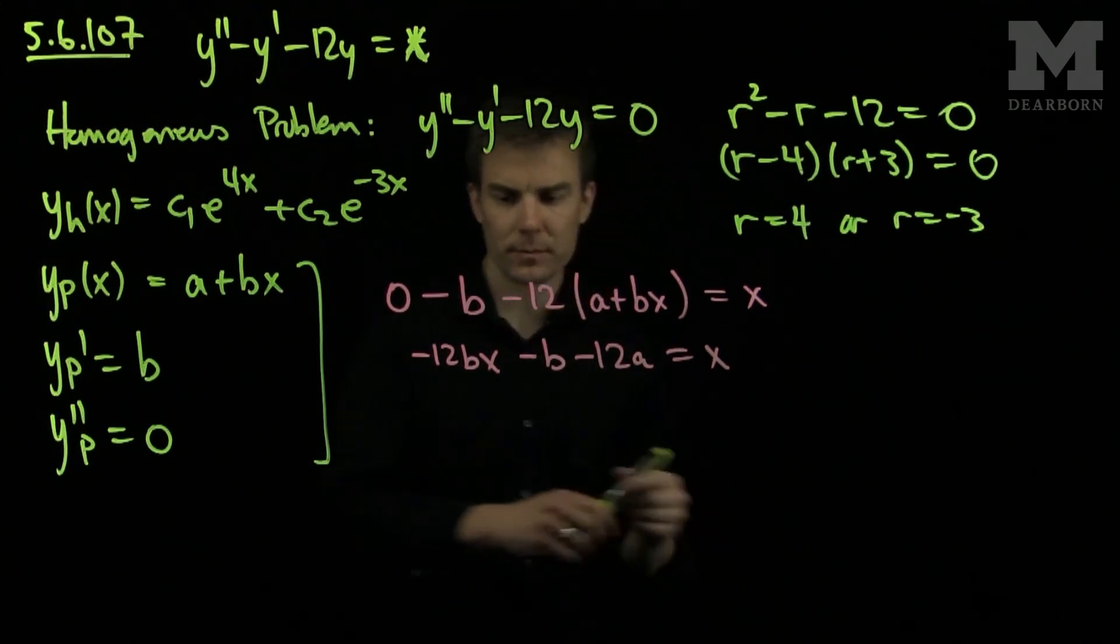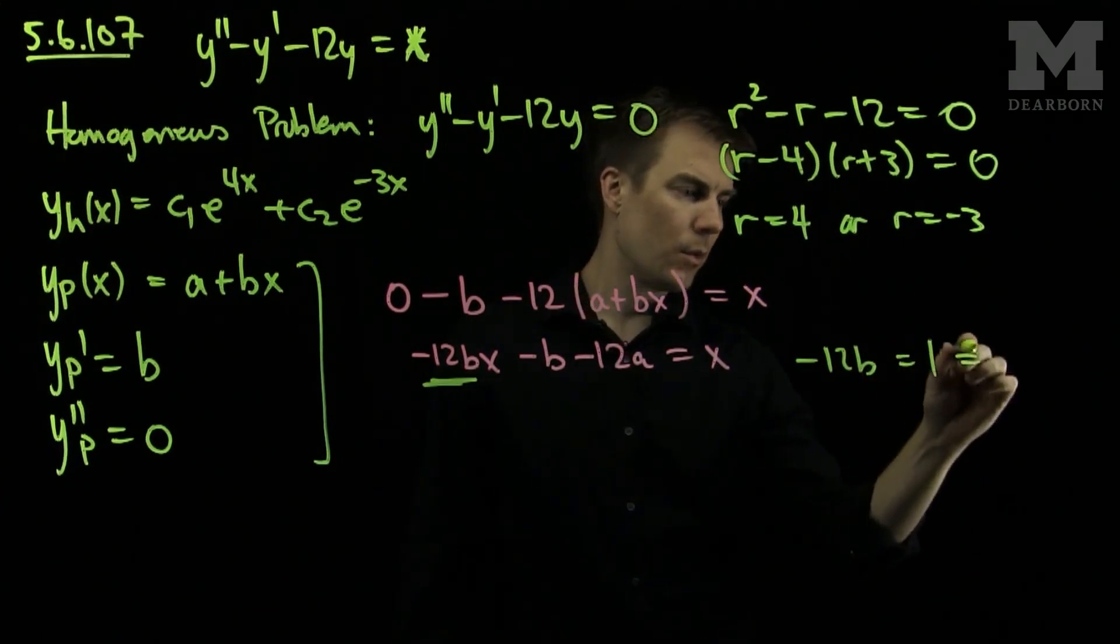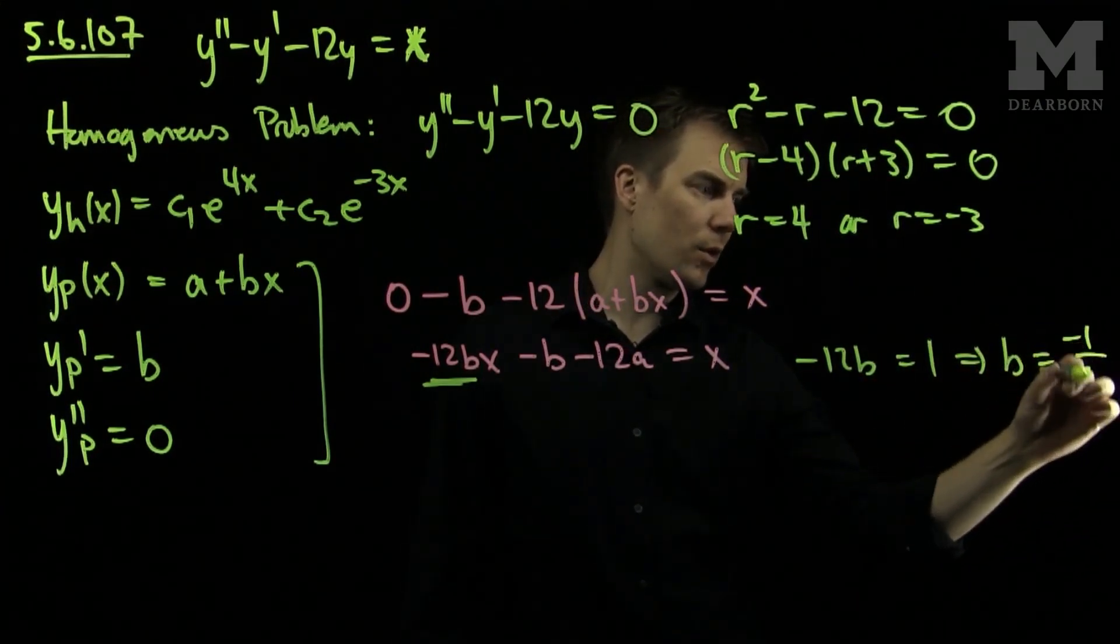Comparing the coefficients, we see that negative 12b must be equal to 1, which tells me that b is equal to negative 1 over 12.